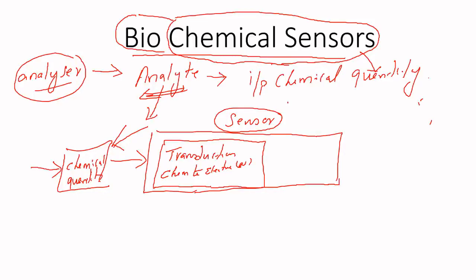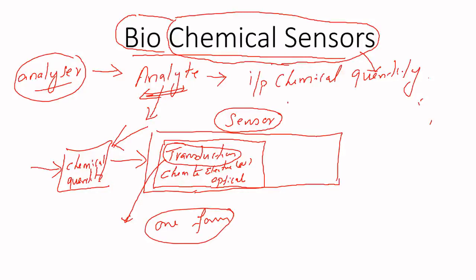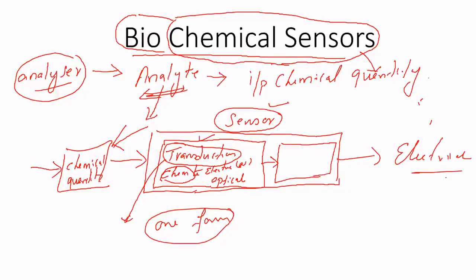That is the difference between a transducer and a sensor. A transducer converts one form of energy to another form of energy. In this case, chemical energy can be converted to electrical, optical, or acoustical. But a sensor specifically converts any form of energy into an electrical output — the output must be electrical.